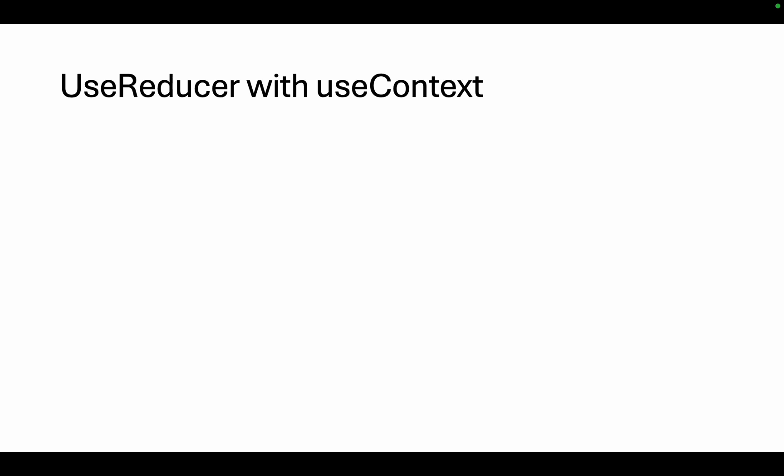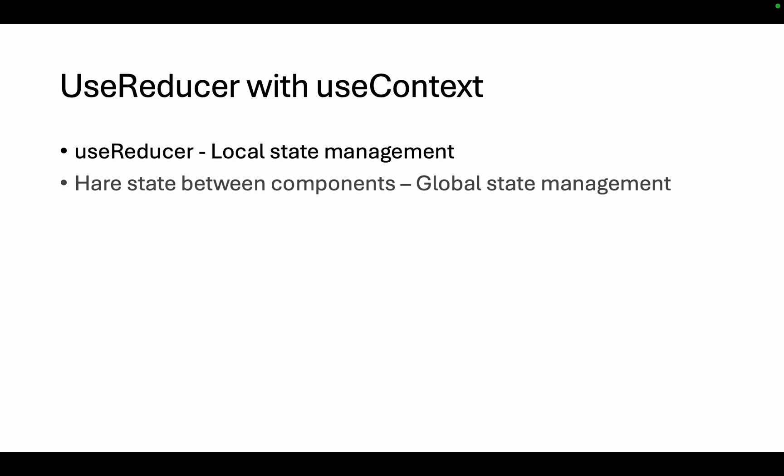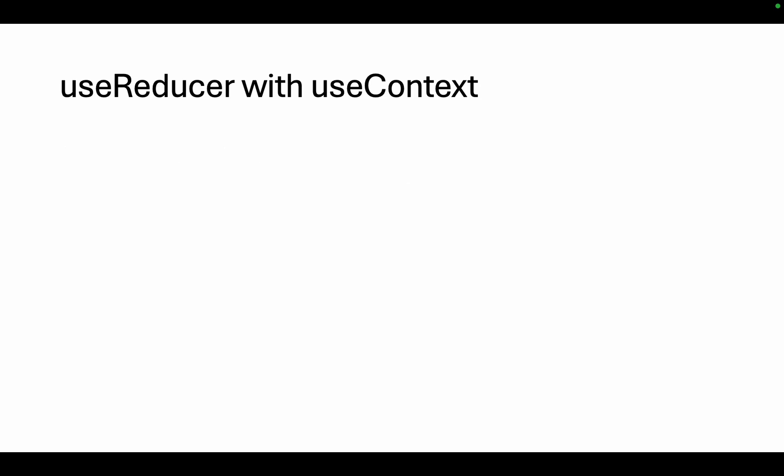Let's learn why we need useContext hook with useReducer hook. In the last tutorial we had seen that we are implementing a counter with useReducer hook, but the counter value is managed in state locally. What if we need to manage the same state globally? For example, we have a requirement in which we have a state and we have to share the value of that state between multiple components. In that scenario we will implement useReducer hook with useContext hook.